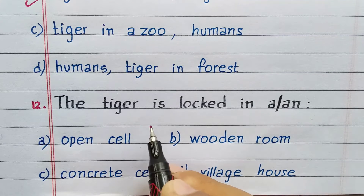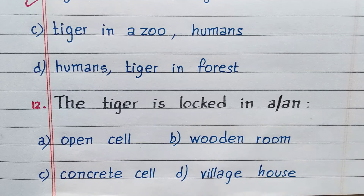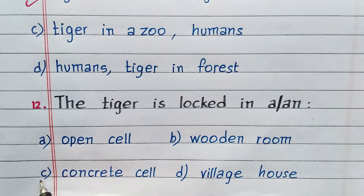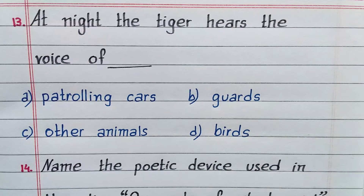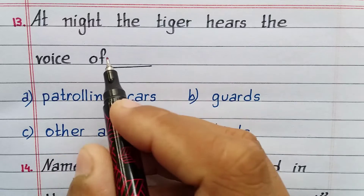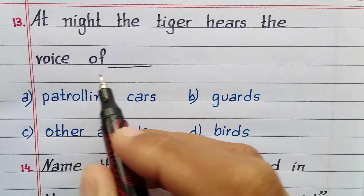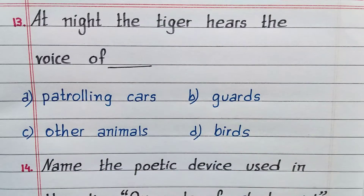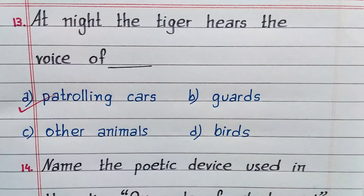The tiger is locked in a concrete cell. At night, the tiger hears the voice of — Option A. Patrolling cars.